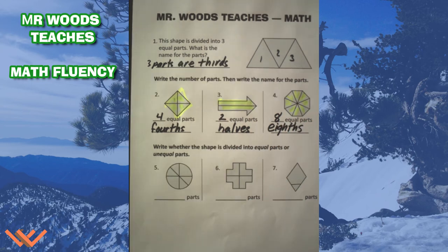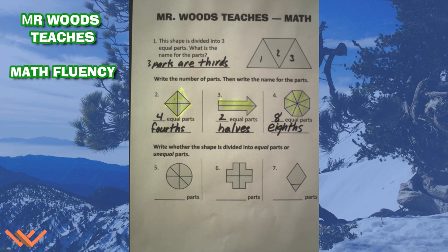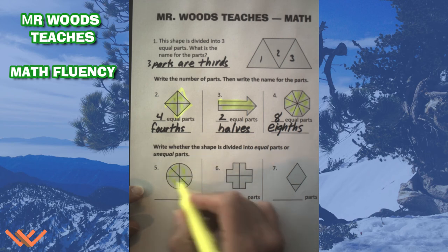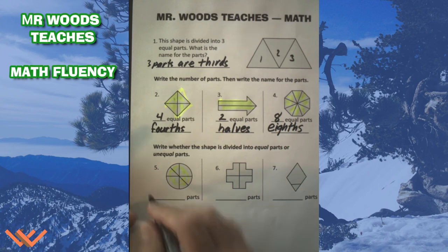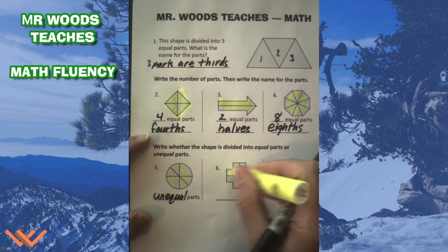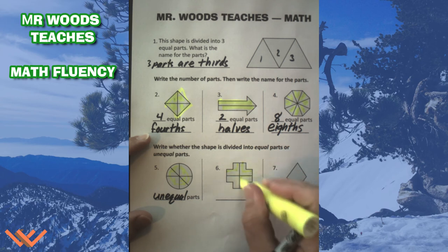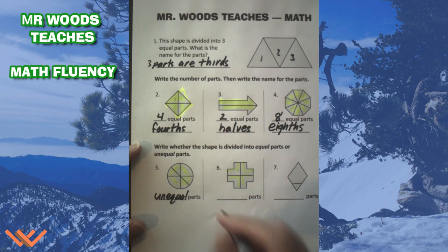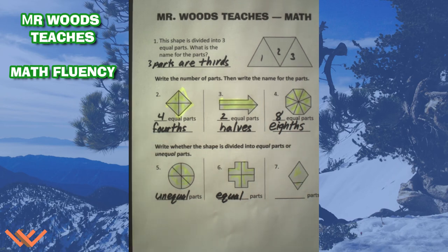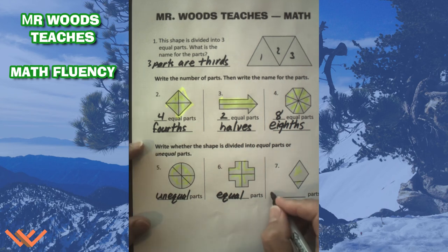Let's look down here. It says write whether the shape is divided into equal parts or unequal parts. These parts equal this part and this part equals this part, but they don't equal a whole — so the whole thing would be unequal parts. We have two parts and each looks the same as the others, so we have equal parts. And then number seven, the last one — we have two parts, but they're not equal, so we say they are unequal.